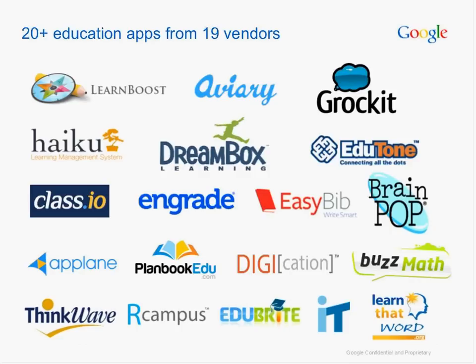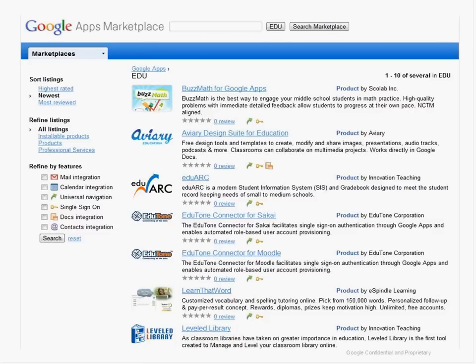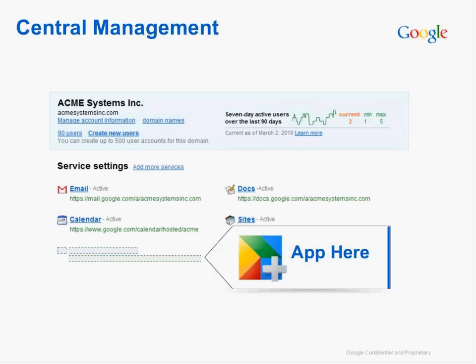These apps cover every need in the education space, including learning management systems, gradebooks, student tools like AVA and eBib, and learning platforms like BrainPop, DreamBox, and Grockit. You can go to the Marketplace and browse, read reviews, and read descriptions to understand which applications make the most sense for your domain. This is very different from the old model where a salesperson would come, sell you CDs to install and maintain, and set up different user accounts.